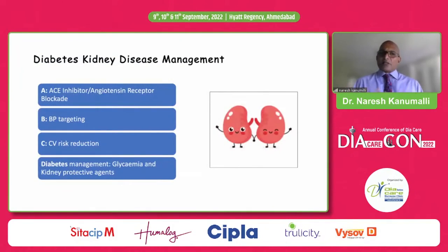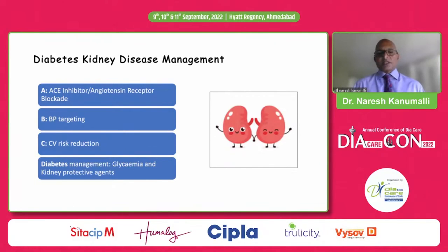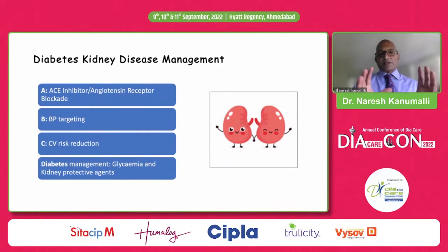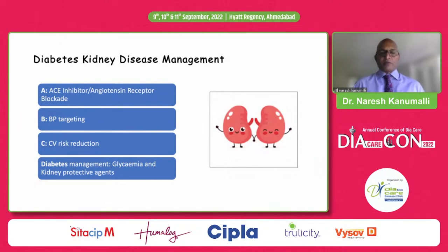For diabetic kidney disease management, the main treatments are ACE inhibitors or angiotensin receptor blockers if intolerant of ACE inhibitors. Target blood pressure to an appropriate level, look at cardiovascular risk reduction through lifestyle changes and statins, and manage diabetes with glycemia control and kidney-protective agents. Various management protocols have been developed regarding cardiovascular risk management, glycemia reduction, and identifying the best therapy for people with diabetes and chronic kidney disease or cardiovascular disease.